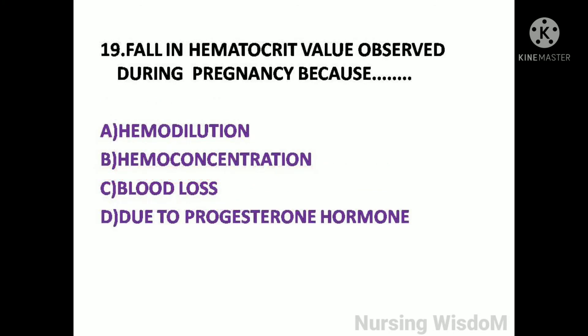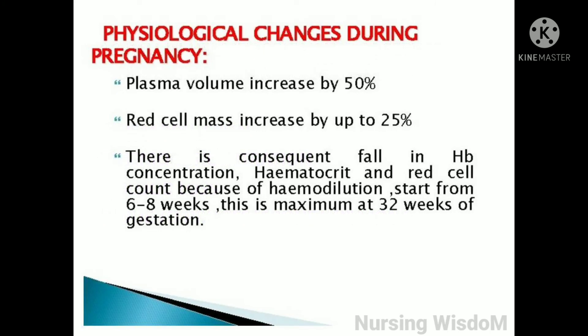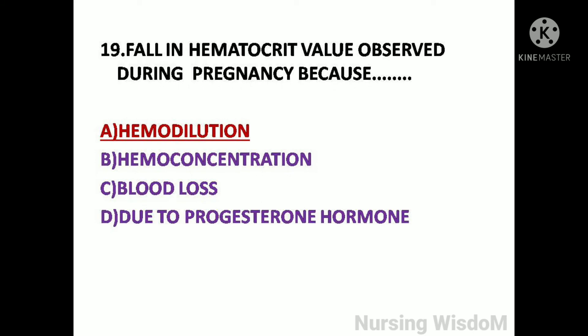Next question: Fall in hemoglobin and hematocrit values observed during pregnancy is because of — option A: hemodilution; option B: hemoconcentration; option C: blood loss; option D: due to progesterone hormone. Physiological changes during pregnancy: plasma volume increases by 50%, red cell mass increases by up to 25%. There is a consequent fall in hemoglobin concentration, hematocrit, and red cell count because of hemodilution, starting from 6 to 8 weeks and maximum at 32 weeks of gestation. So here the answer is option A, hemodilution.